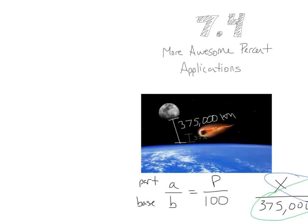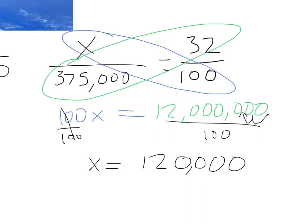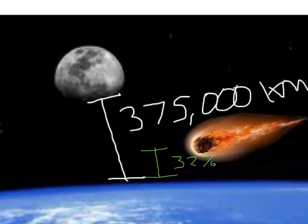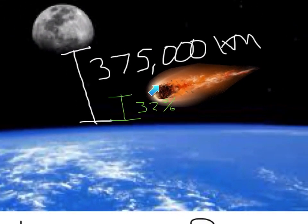120,000, and we're talking about what here? Kilometers, so 120,000 kilometers. Well, what is that 120,000 kilometers? That's the distance away that this asteroid was from the Earth. Scary.